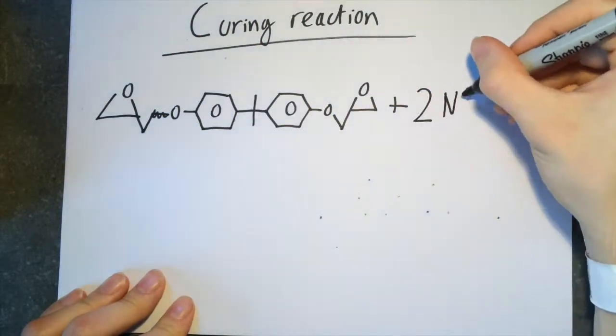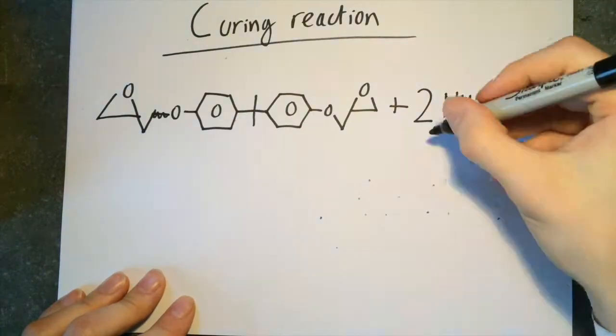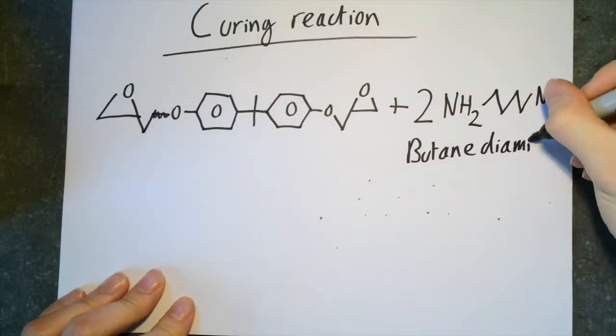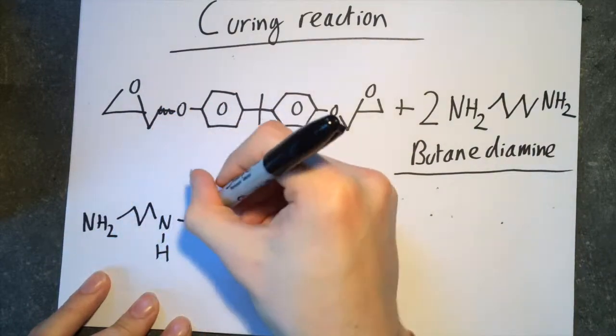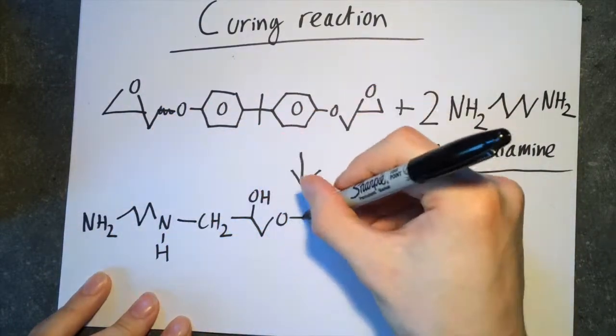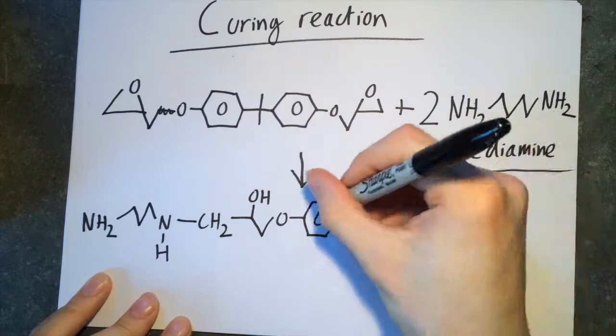One of the most common epoxy resins used is DGEBA, diglycidyl ether of bisphenol A. DGEBA is reacted with 1,4-butanediamine, this is the hardener. This reaction causes polymerization between the DGEBA monomers that form a tridimensional polymer.